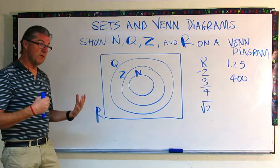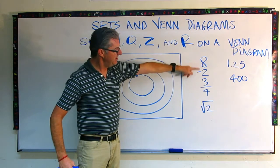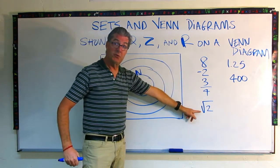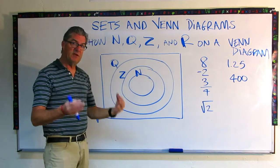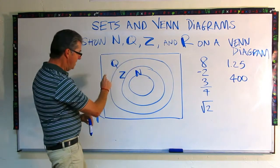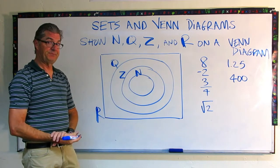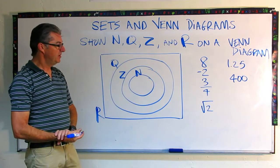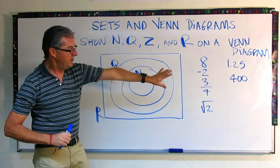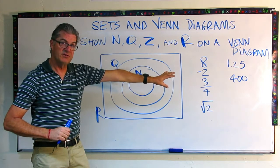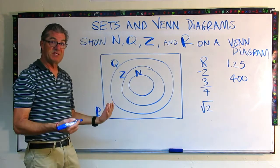Let's take a look at where some numbers might fall in this particular Venn diagram. I've written down a bunch here. I've got eight, negative two, three quarters, square root of two, 1.25 and 400. So if you want to try this, pause the video right now and take those numbers and put them in the Venn diagram where they belong. All right, so let's take a look. And the idea here is let's be as specific as we can. They're all real numbers. All of those are real numbers. So you could put them in this outer area, but we can be more specific with some of them.